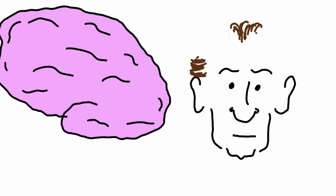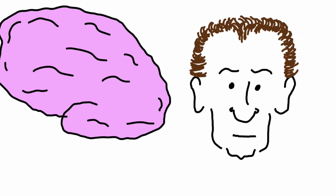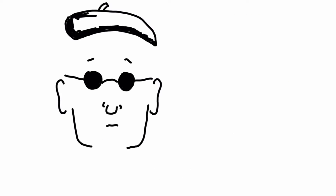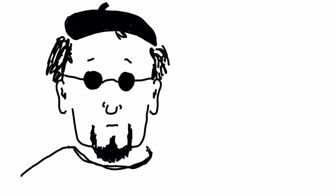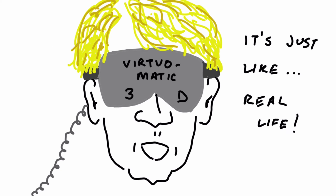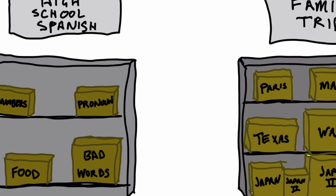The forebrain later becomes the largest portion of the brain, and it is representative of the image most people think of when discussing the brain overall. It is the most highly developed of the three portions, being the center of intellectual and creative thought, sensory experience, and the warehouse for our accumulated knowledge and memories.